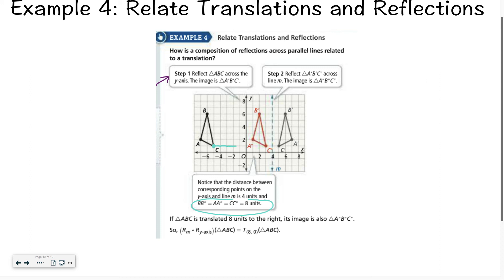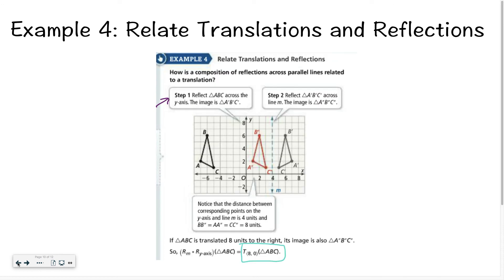So 1, 2, 3, 4, 5, 6, 7, 8. That worked for C. 1, 2, 3, 4, 5, 6, 7, 8. It worked for A. 1, 2, 3, 4, 5, 6, 7, 8. It worked for B as well. So if you take the distance between your parallel lines and double it, you can save yourself the trouble of reflecting twice and do a single translation instead. So that translation would be (8,0) in this case. If you have any questions at all about today's lesson, please be sure to reach out for some help. I'm more than happy to assist you. Have a great day.